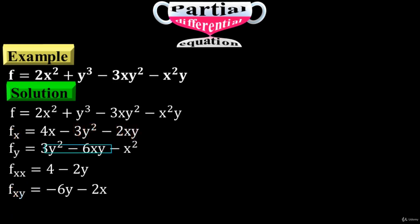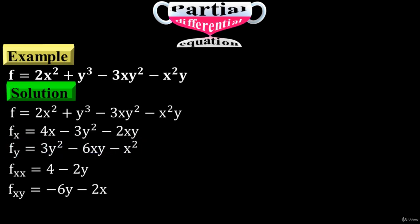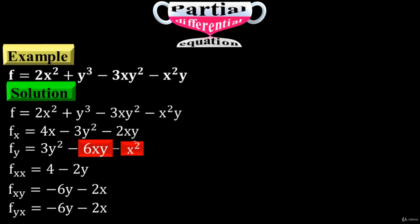Take f sub y now and differentiate it with respect to x first. The variables x exist here, so differentiate them with respect to x to have f sub yx equals minus 6y minus 2x.